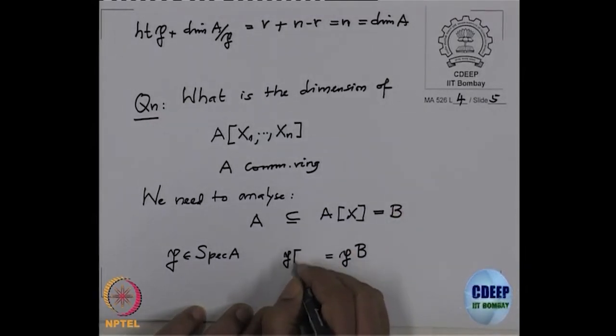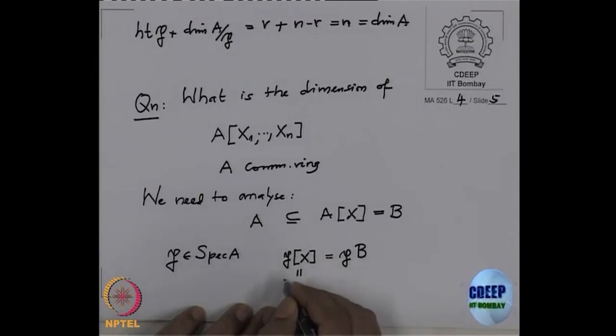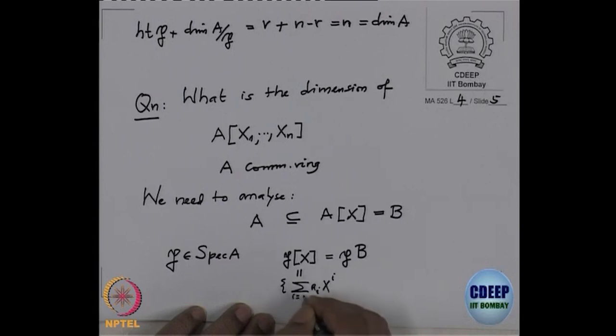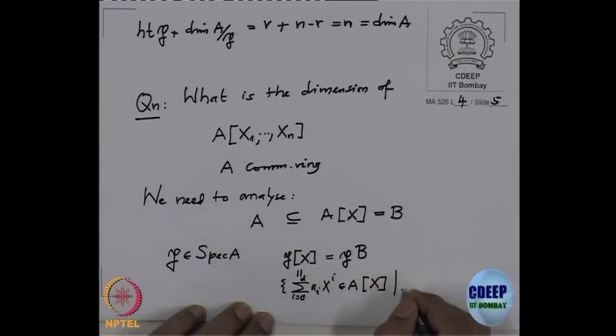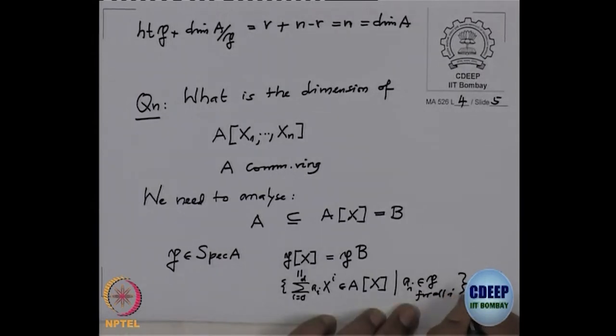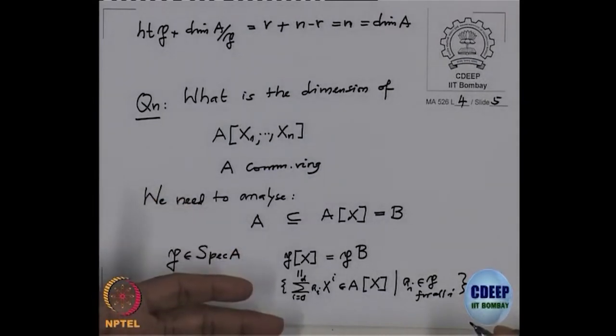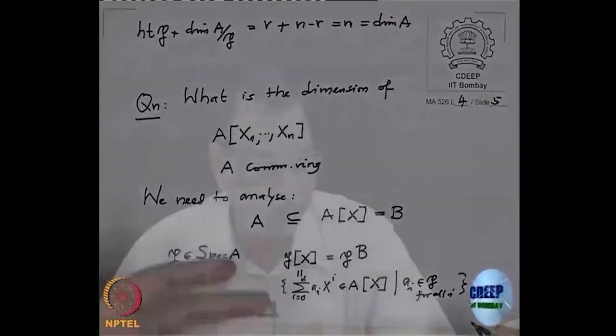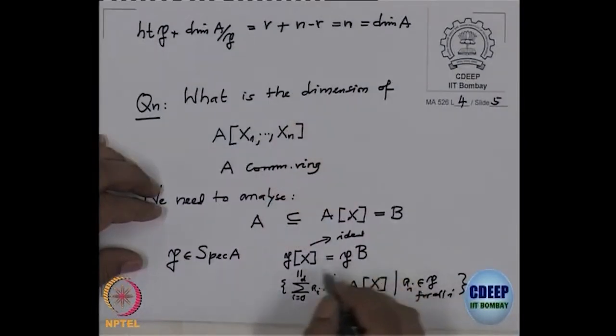That notation I want to use: P[X]. This is precisely the set of all polynomials ∑ Aᵢ Xⁱ, i from 0 to D, in A[X] such that the coefficients Aᵢ are in P for all i. This is clearly an ideal because if you have two such polynomials and you add them, the coefficients are correspondingly added, so they are also in P. If you multiply by an arbitrary polynomial, the new coefficients will be in the ideal generated by the coefficients of this, so they are in P.